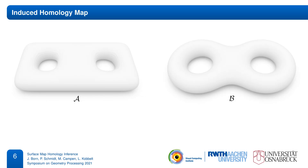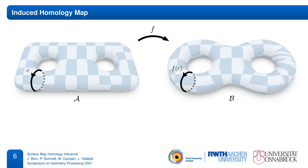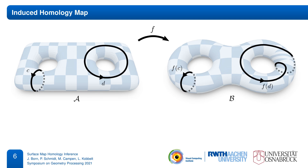Now consider two surfaces A and B. Assume there is a homeomorphism F that maps between them. Since it is continuous, we can use it to map cycles from A to B. Indeed, this action of F on cycles also induces a well-defined map between homology classes of the two surfaces. We obtain a so-called induced homology map that uniquely associates each homology class of A with a corresponding homology class of B.